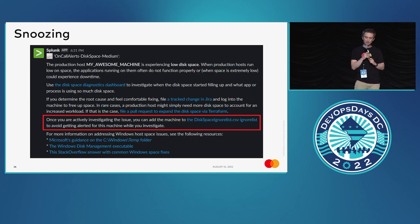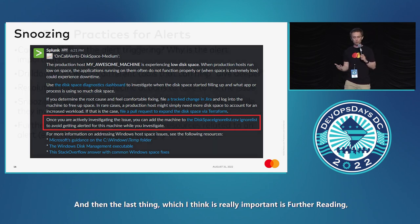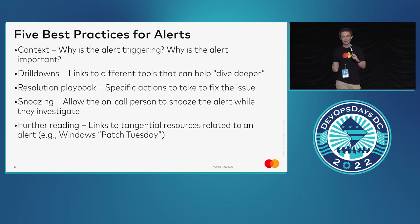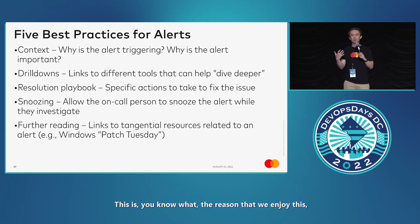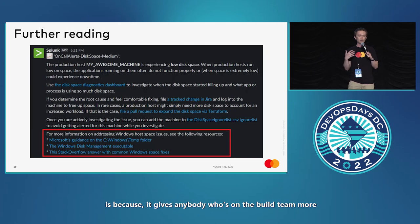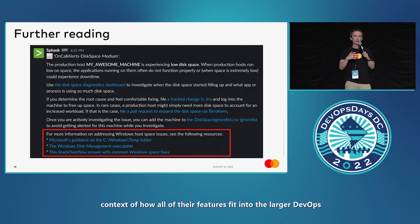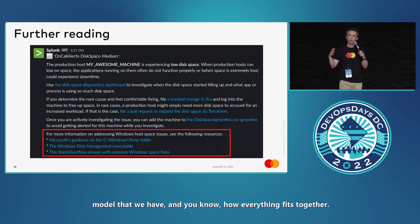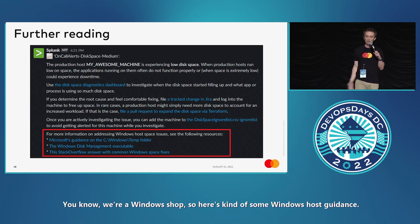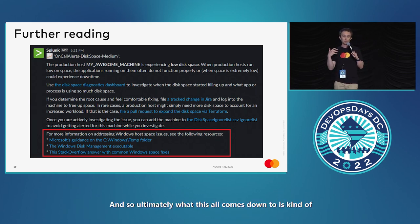The fifth best practice is further reading — links to tangential resources related to an alert. We enjoy this because it gives anyone on the build team more context of how their features fit into the larger DevOps model and how everything fits together. For example, since we're a Windows shop, this last paragraph provides some Windows host guidance.